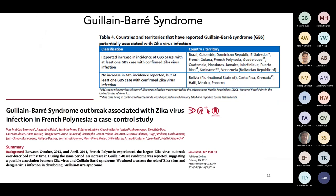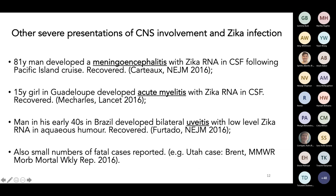Guillain-Barré syndrome — the autoimmune neurological illness that causes muscle weakness through the immune system damaging the peripheral nervous system — a few countries started reporting cases associated with Zika virus infection. At the same time, countries started notifying severe presentations of CNS involvement with Zika infection, diagnosed either indirectly with serology or with PCR to detect the RNA of the virus. Cases of meningoencephalitis, acute myelitis, and lots of eye abnormalities such as uveitis were being reported. Thankfully, a very small number of fatal cases were reported up to that point.